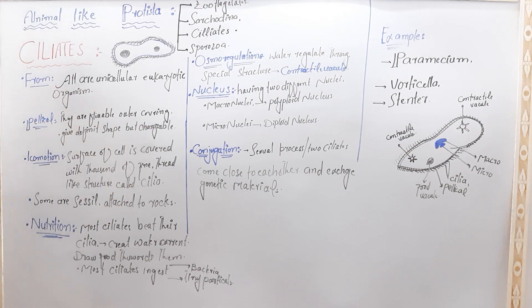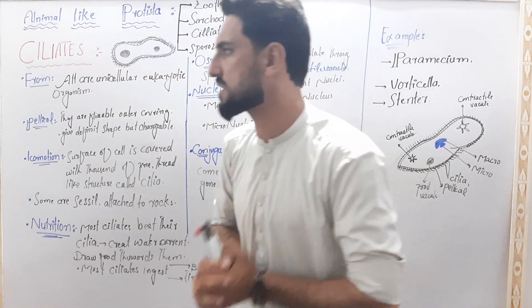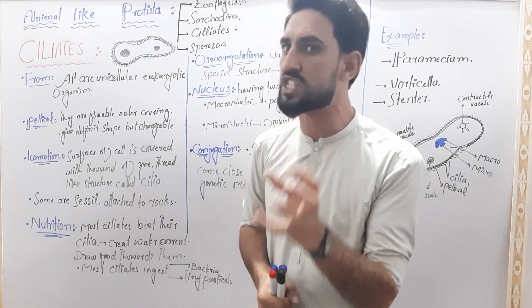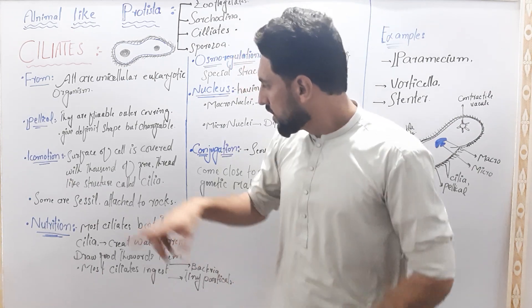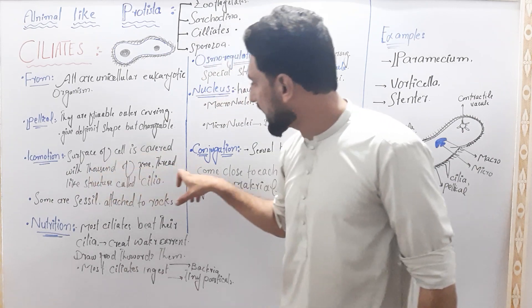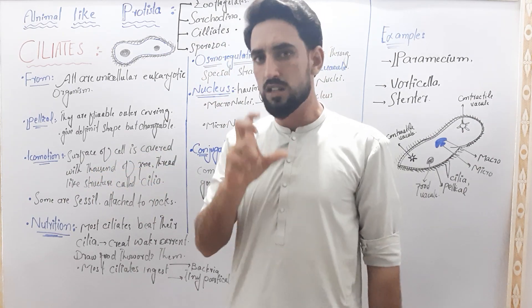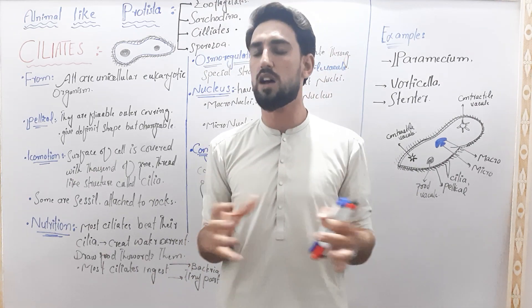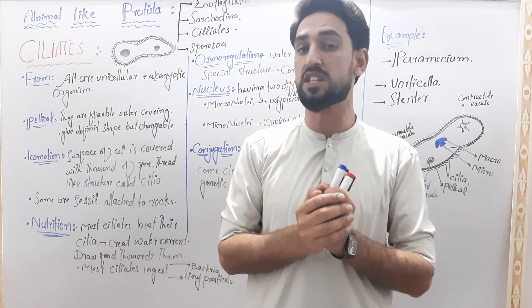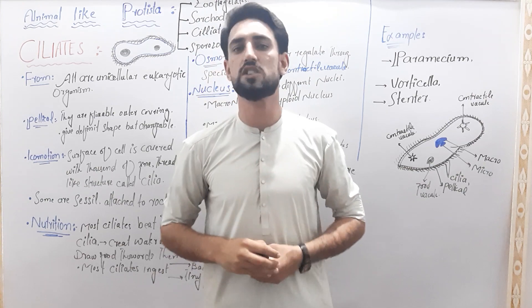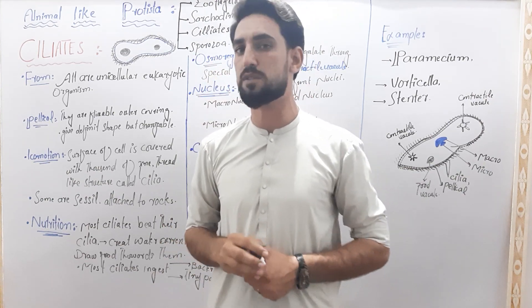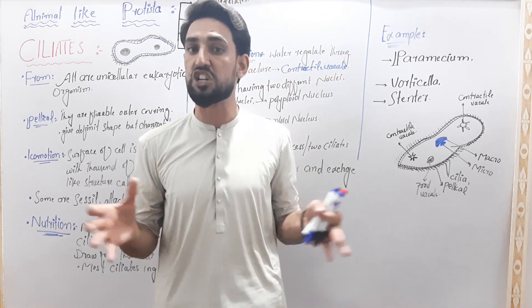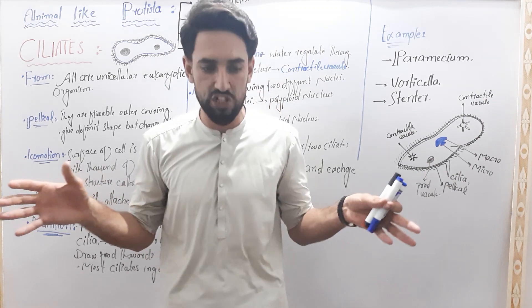The next thing is locomotion. The locomotion of ciliates is by cilia. The surface of the cell is covered with thousands of hair-like structures called cilia.